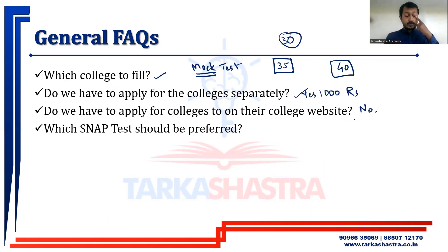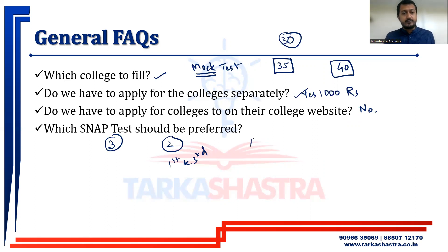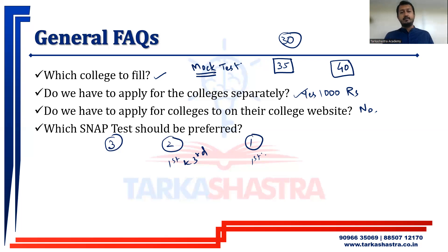The most important and confusing question is: which SNAP test should be preferred? If you are writing two SNAP tests, I would recommend the first and the third. If you are writing only one, I would recommend just the first. The reason is that the level of difficulty increases gradually — SNAP Test 1 is the easiest, Test 2 is a bit more difficult, and Test 3 is the most difficult. Also, the question composition can vary — for example, you may not get any time-speed-distance questions in Test 1 but get three in Test 3.